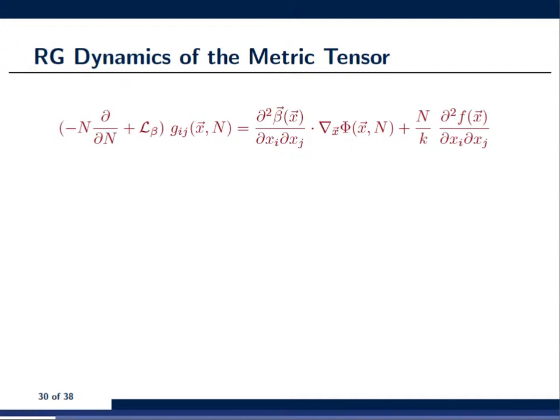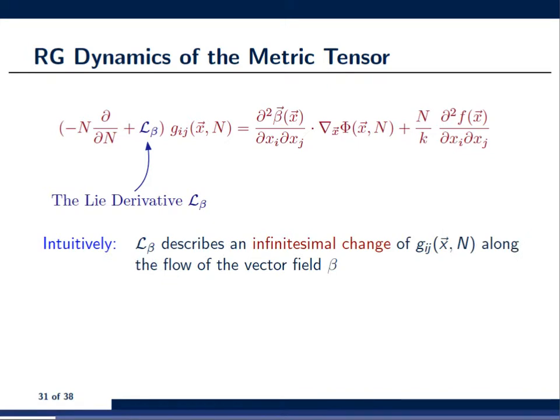First of all, let's look on the left-hand side of the equation. This L of beta is what we call the Lie derivative with respect to the beta function. And what this is telling you intuitively is that it describes the infinitesimal change of the thermodynamic metric along the integral curves of the vector field beta.